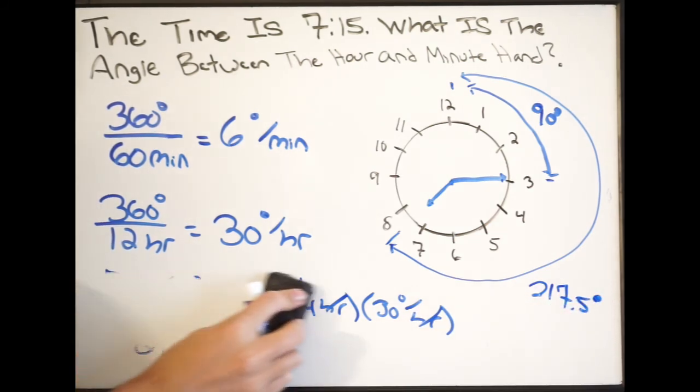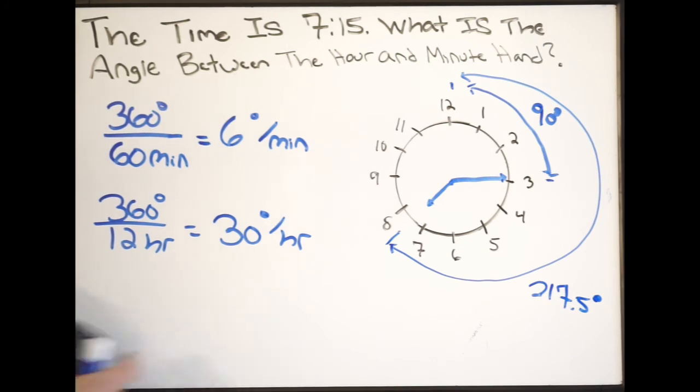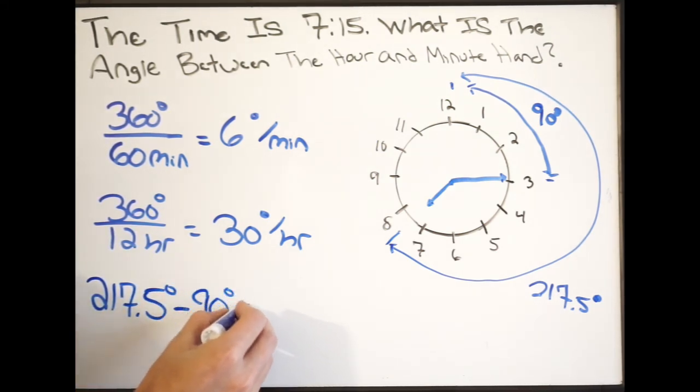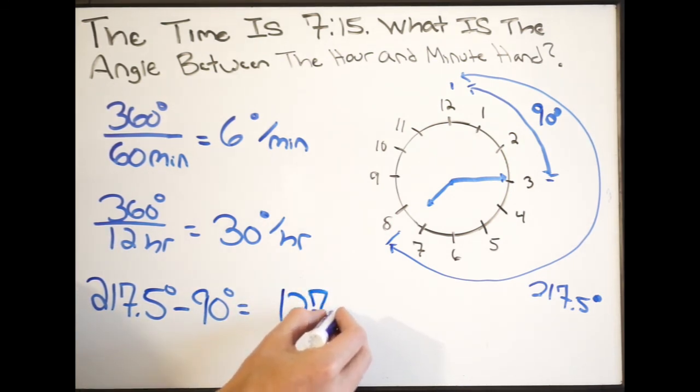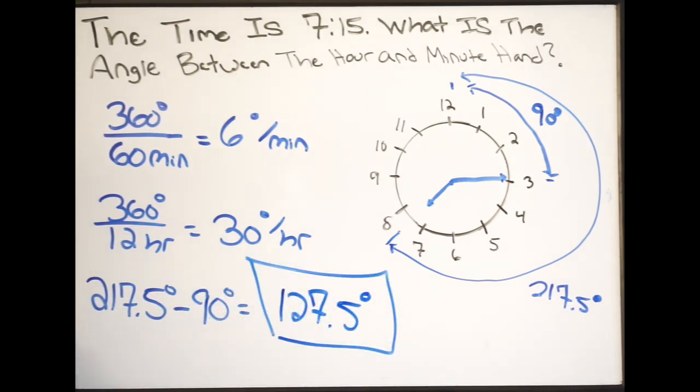Let's go ahead and just erase this now. So all I'm going to do at this point is do 217.5 degrees minus 90 degrees. And when I do this, this is going to give me the angular measure between the hour and minute hand. So doing this, plugging into our calculator, we're going to get 127.5 degrees. This is going to be the angular measure between our minute and hour hand. And that is it.